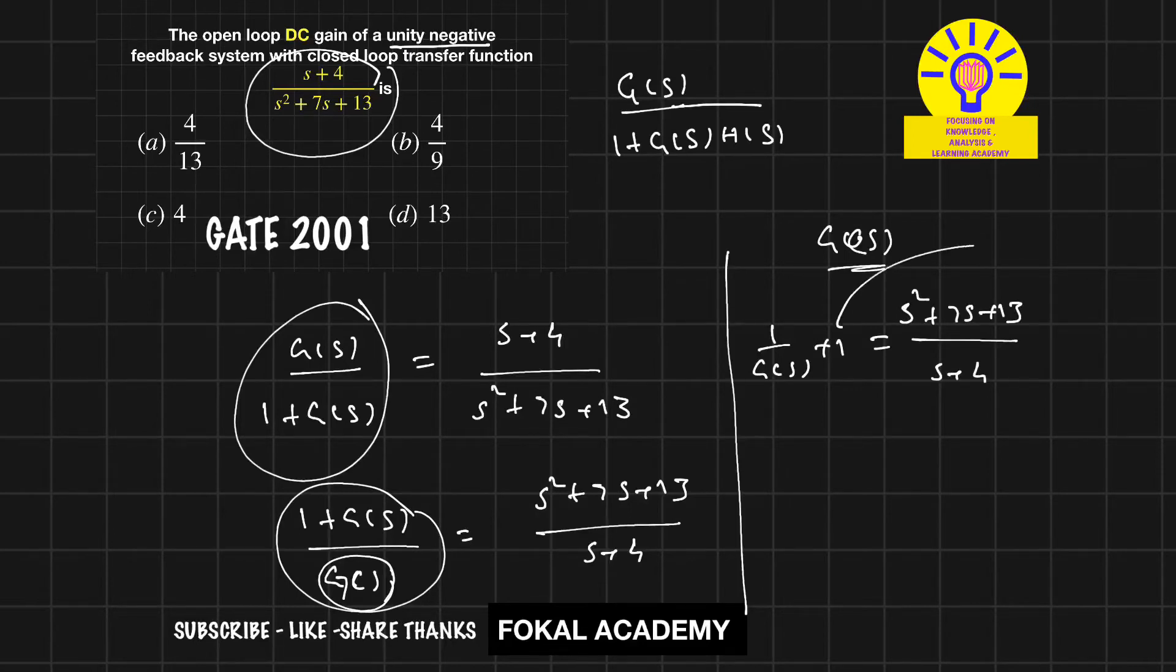Bring this one on the other side, it becomes minus 1. So 1 by G(s) equals s squared plus 7s plus 13 minus s minus 4, all divided by s plus 4.